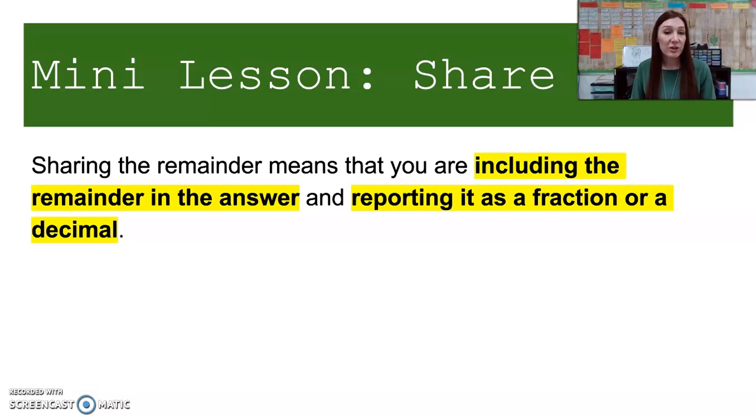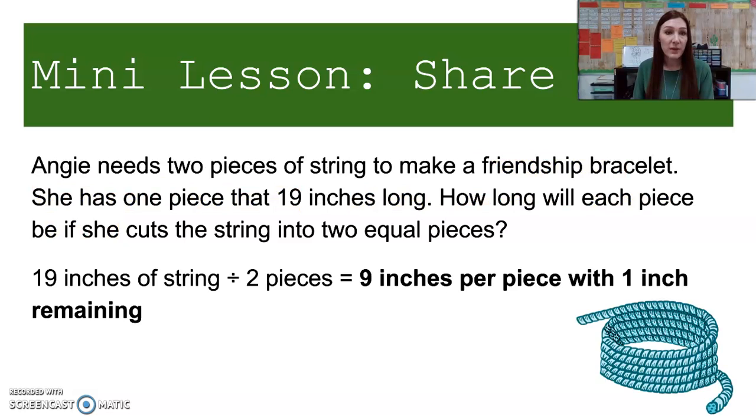Last, sharing the remainder. Sharing the remainder means that you are including the remainder in the answer and reporting it as a fraction or a decimal. So Angie needs two pieces of string to make a friendship bracelet. She has one piece that is 19 inches long. How long will each piece be if she cuts the string into two equal pieces? If we divide 19 by two, we get nine inches per piece with one inch remaining.